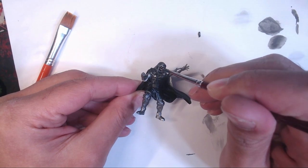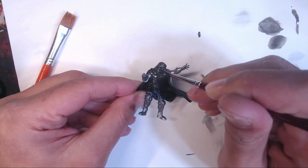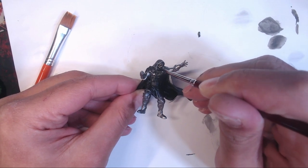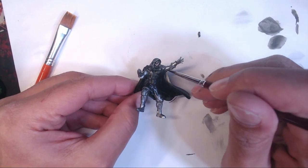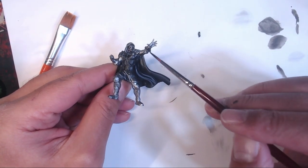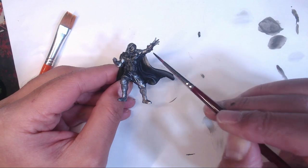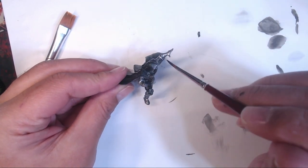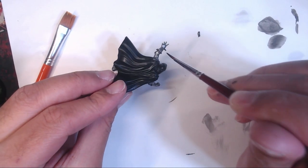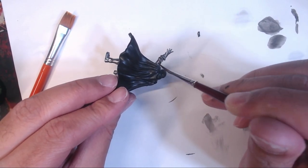Next comes a quick Nuln Oil wash, to add definition that we like to see in any armor, as it gets those seams super dark, and will make the flat areas really pop in the next step. Not much to say here, just get it on and make sure it doesn't pool in the flat areas, only in the cracks. Heavy washes like this tend to take a bit longer to dry, so this is where the hairdryer's heat really comes in handy.